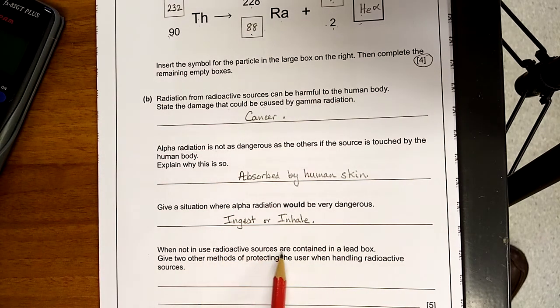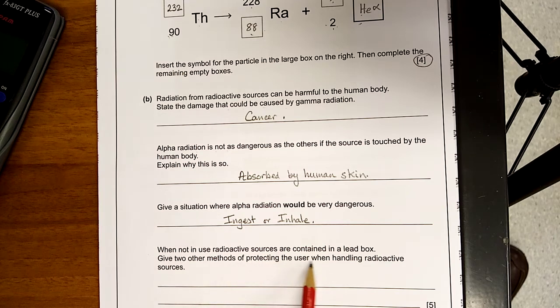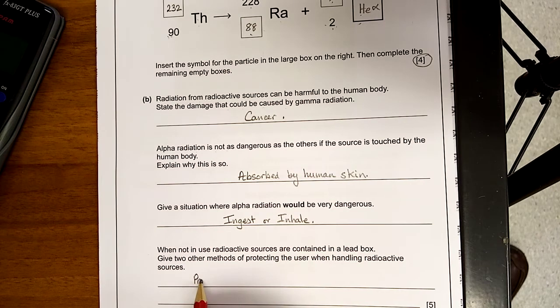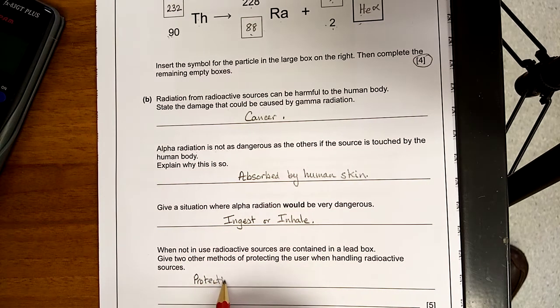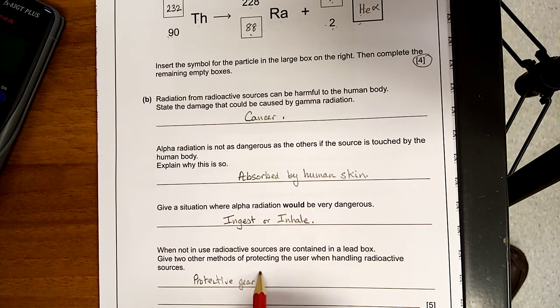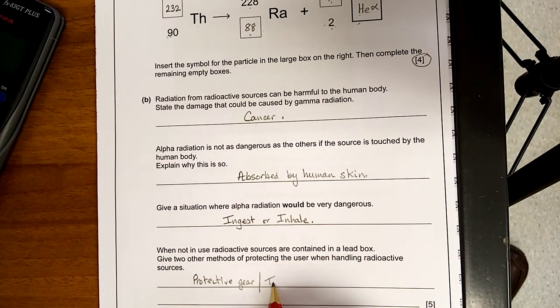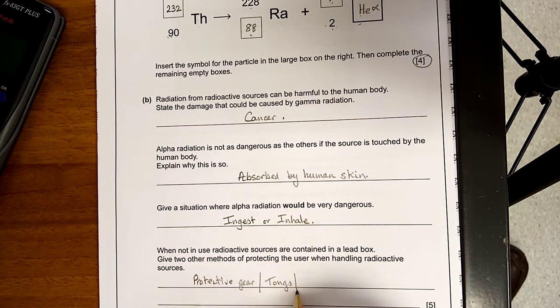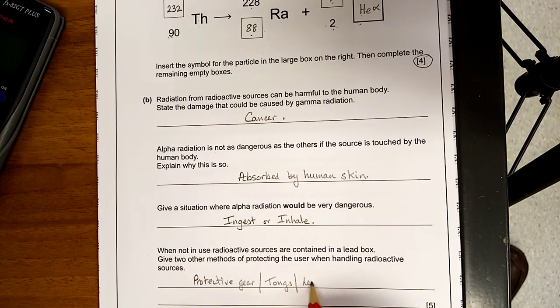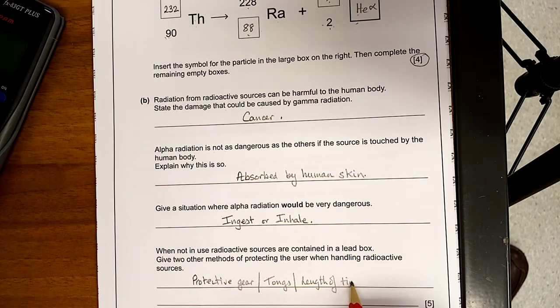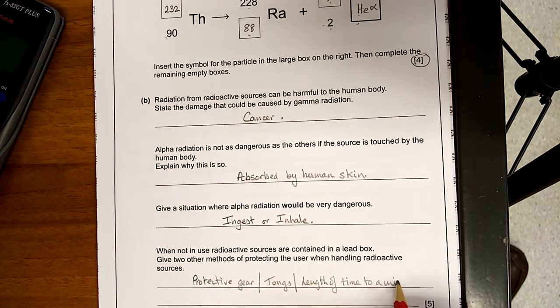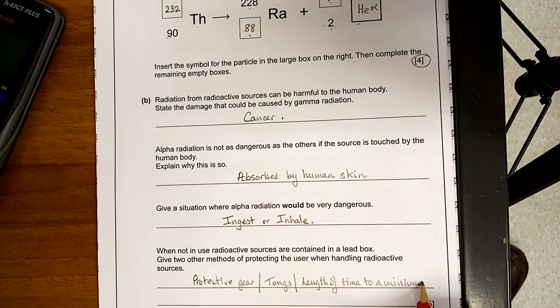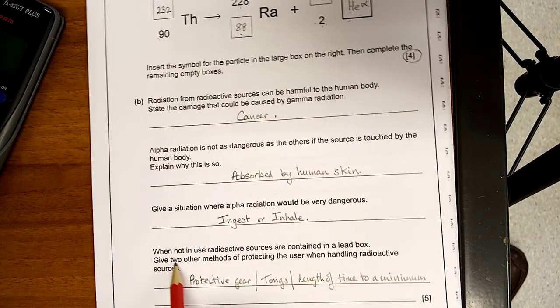When not in use, radioactive sources are contained in lead blocks. Give two other methods of protecting the user when handling radioactive sources. So the answer is protective gear, clothing, whatever you like to call it, tongs for handling it, length of time to a minimum. And those will do rightly. Any of those three. Again, two, so two sentences.